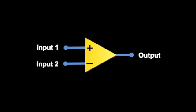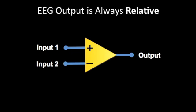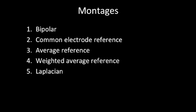One of the keys to a deeper understanding of the interpretation of EEG is understanding the basis of EEG montages. We have to remember that the basis of EEG is the differential amplifier, and that EEG output is always relative. For this reason we have a variety of ways of looking at EEG, which we call montages. We will go through four of these five montages in this video.